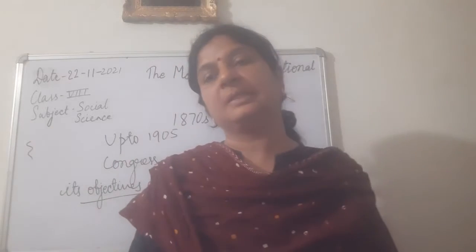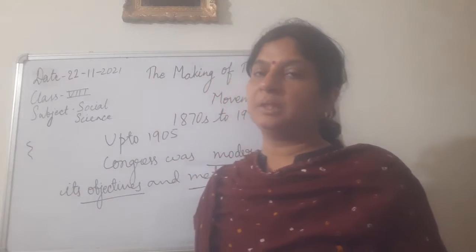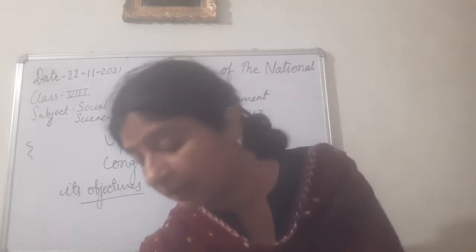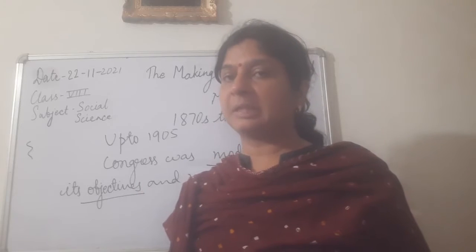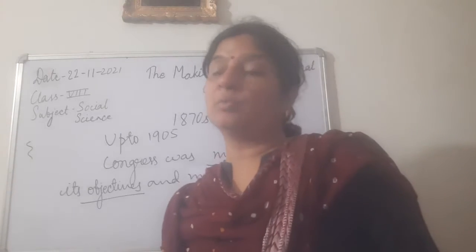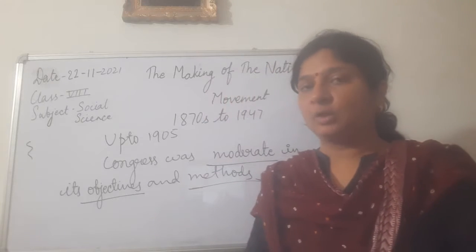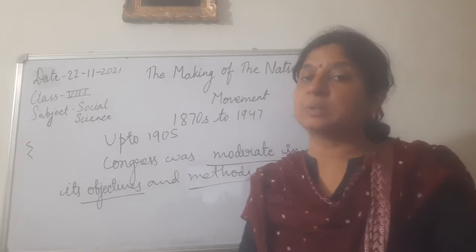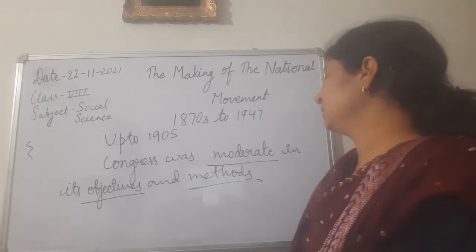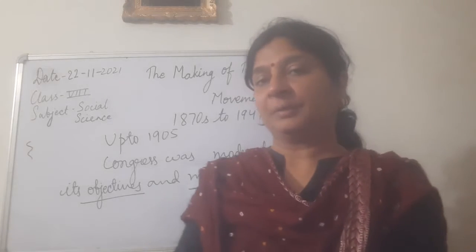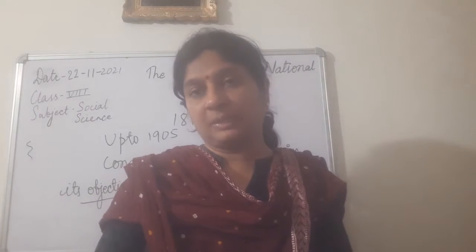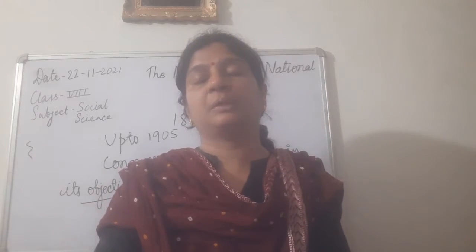Good morning everyone and welcome to the class. We are doing the chapter 'The Making of the National Movement: 1870s to 1947.' In this chapter we have covered the foundation of the Indian National Congress in December 1885. Now we are looking at what were the objectives and methods of the Congress party in the first 20 years of its establishment. Till 1905, the Congress was moderate in its objectives and methods.